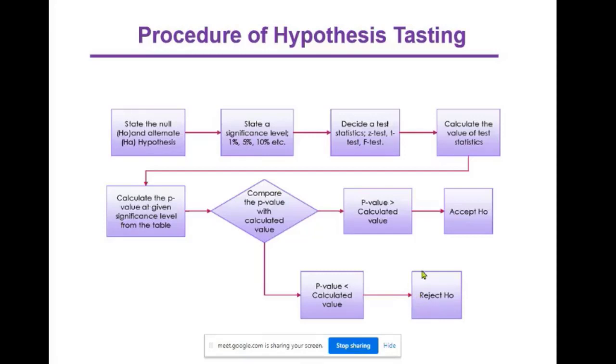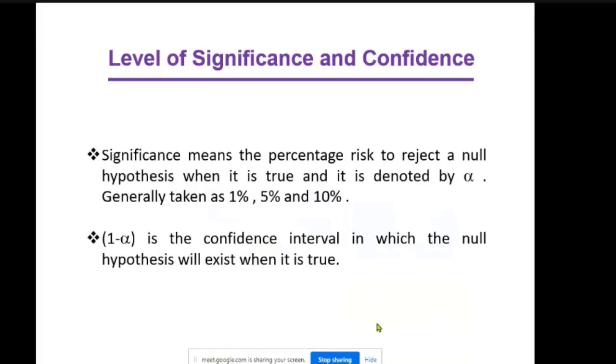This is the procedure of hypothesis testing. Now, level of significance and confidence. Significance means the percentage risk of rejecting a null hypothesis when it is true, denoted by alpha, generally taken as 1%, 5%, or 10%.